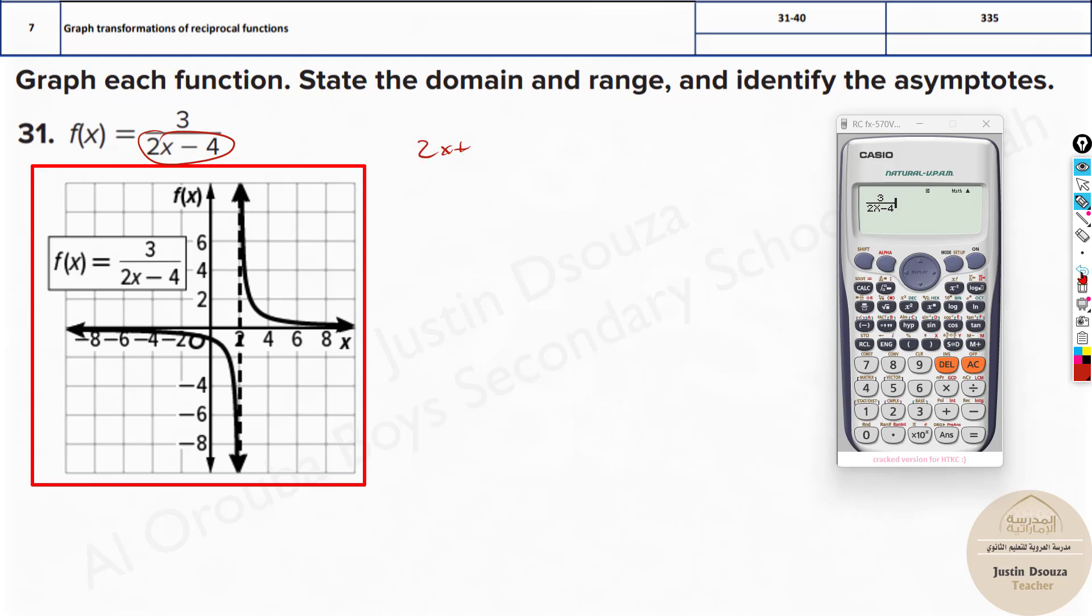Whatever is the denominator, make it equal to zero. It's 2x minus 4 equals zero. You will have 2x equals 4. x is 2. So you can see at x equals 2, there is no defined graph point. It's an asymptote. It goes towards 2, but it will never touch the line of 2. So that dotted line denotes an asymptote.